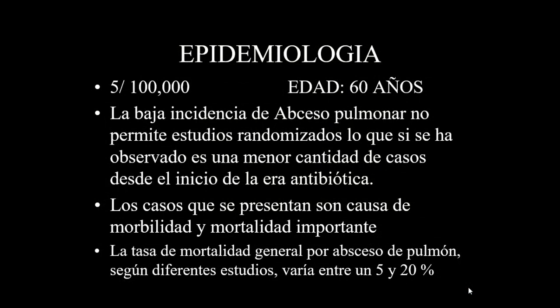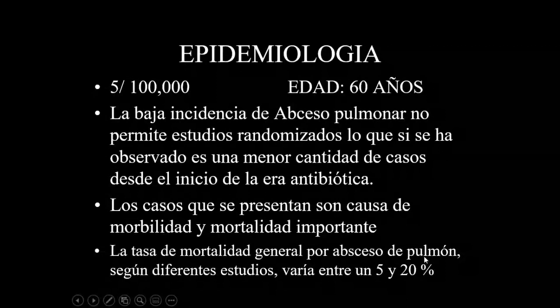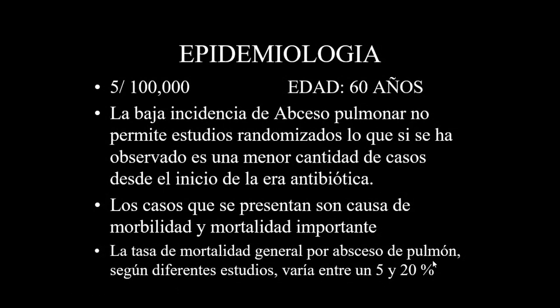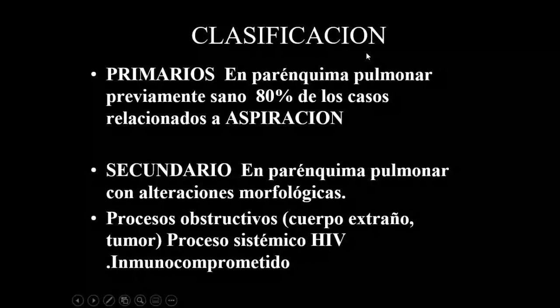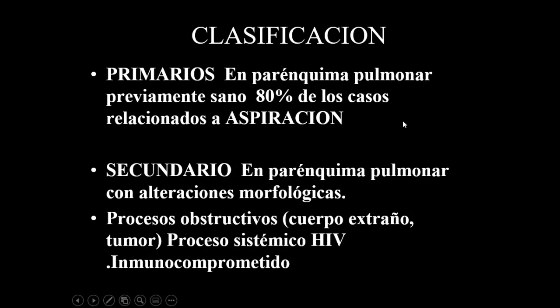La tasa de mortalidad del absceso pulmonar va entre 5 a 20%, dependiendo de la edad y del tipo de infección que afecta al paciente. Existen clasificaciones que hablan de abscesos primarios y secundarios. El absceso primario está relacionado con parénquima pulmonar previamente sano, como en el caso de un paciente alcohólico que se aspira.